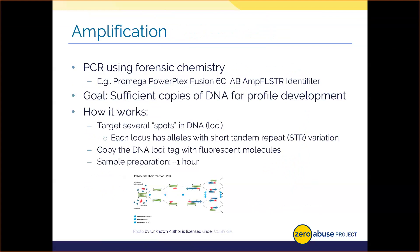For example, the PowerPlex Fusion 6C kit from Promega — the one my lab used — targets 27 loci with huge variation in repetitive DNA sequences from person to person. Each locus has great variation in DNA sequence such that we, with enough different loci, create a highly distinguishing and unique DNA profile matchable back to an individual. Each locus is made of alleles or specific flavors of DNA inherited from our parents, made up of different sequences with repeating patterns called short tandem repeats, three to seven bases in length.